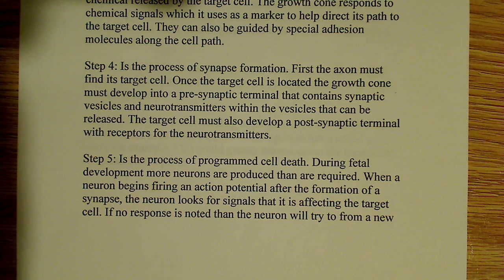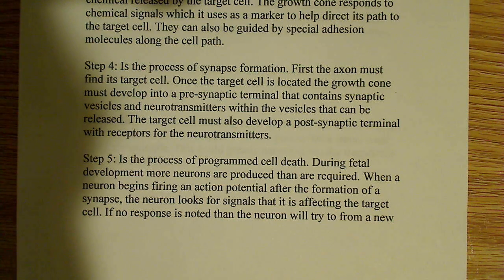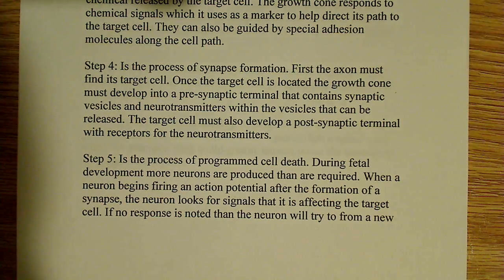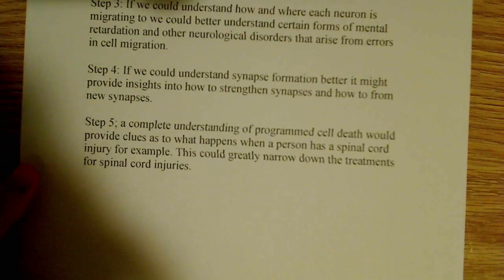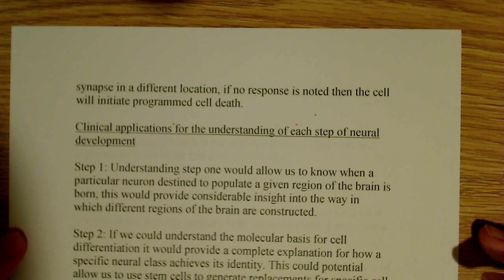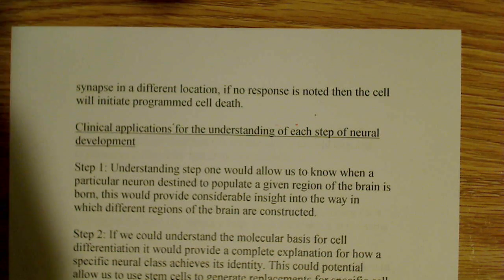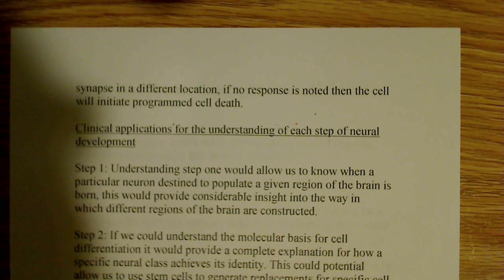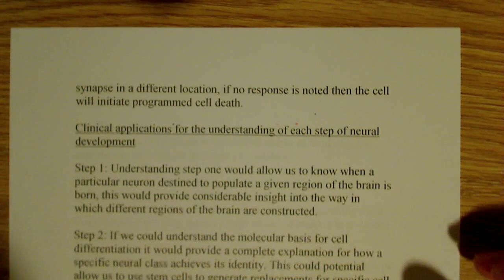If no response is noted, the neuron will start feeling around — it will try to make a new connection, releasing the current connection and moving to a new one. The synapse will try to form in a different location. And if no response is still noted, it will actually initiate the programmed cell death process. That's pretty much the five steps of neural development in general.